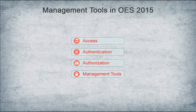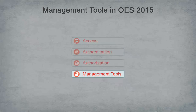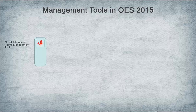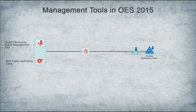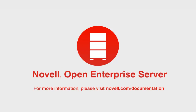Finally, let's take a look at the management tools in OES 2015. With this release, you use Novell File Access Rights Management Tool and the NSS Rights and Quota Utilities to manage the trustee rights and quotas of Active Directory users. The management tools remain the same for eDirectory trustees. To learn more about the NSS AD solution, please visit the OES 2015 NSS Administration Guide on the Novell Documentation Site.